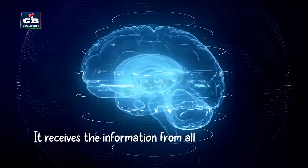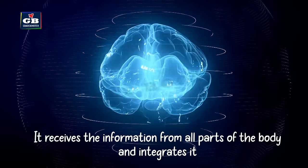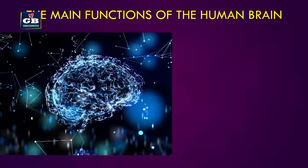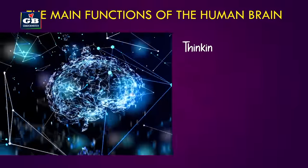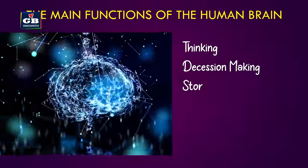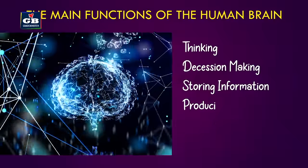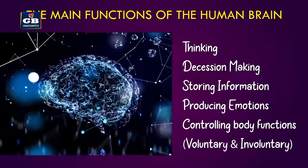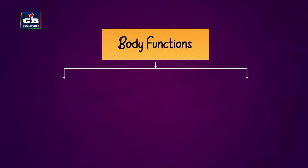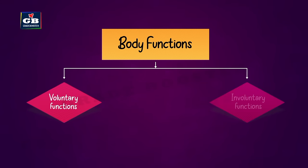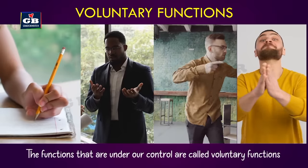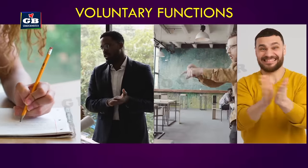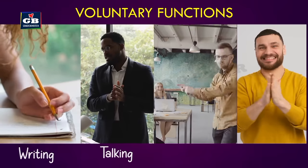The brain is the main coordinating center of our body. It receives information from all parts of the body and integrates it. The main functions of our brain are: thinking, decision making, storing information, producing emotions, and controlling body functions.